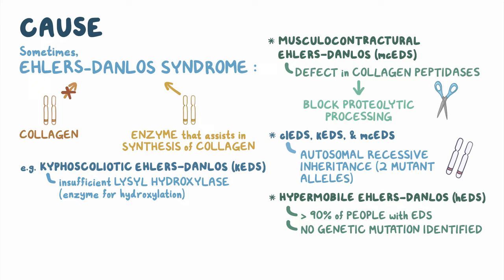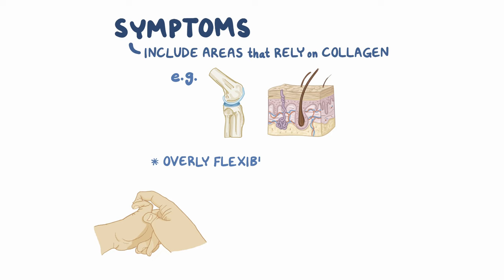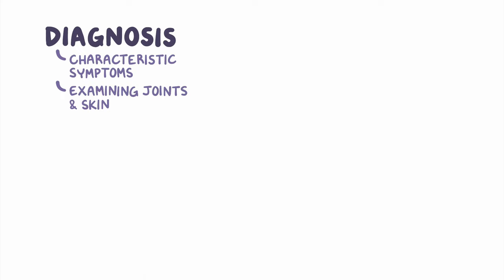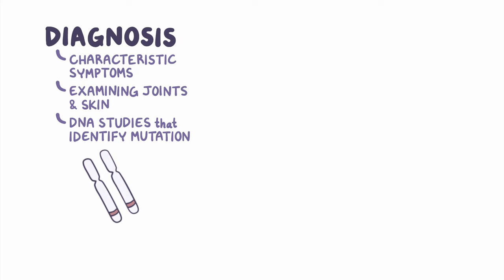The symptoms of Ehlers-Danlos syndrome include areas that rely heavily on collagen, like the joints and skin. Specifically, it can lead to overly flexible joints, easy bruising, and fragile and elastic skin. The diagnosis is mainly based on spotting the characteristic symptoms and examining the joints and skin. For the types associated with specific genetic mutations, diagnosis can be confirmed with DNA studies that can help identify the mutation.